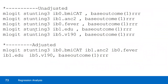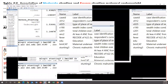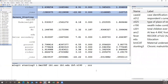This indicates that moderate and severe stunting odds ratios were significantly associated with maternal underweight. This is the syntax for the findings.